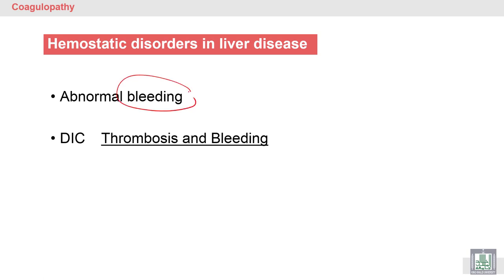As a hemostatic disorder, liver disease presents with abnormal bleeding due to deficiency of most coagulation factors. Some liver diseases also present with DIC — disseminated intravascular coagulopathy — a combination of both thrombosis and bleeding.